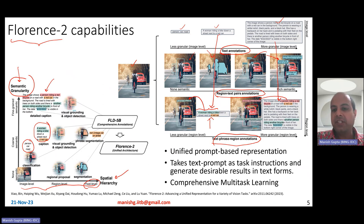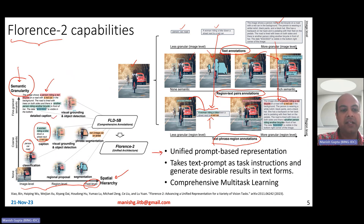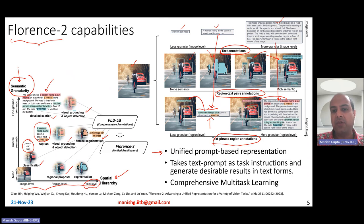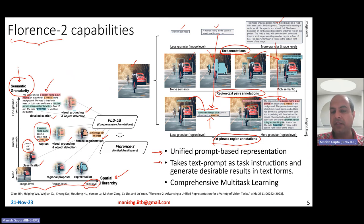Florence 2 essentially has a unified prompt-based representation. Whatever the task — detailed captioning, visual grounding, object detection, phrase segmentation, region proposal, classification, and so on — all of those vision and vision language tasks are represented using a unified prompt-based representation. It takes a text prompt as task instructions and then generates desirable results in text form. It takes the text prompt, a human prompt, and also an image, and then generates text outputs.